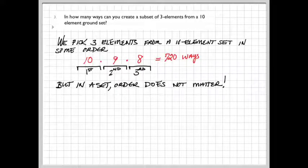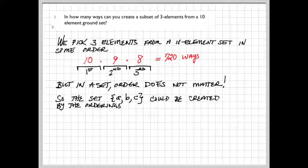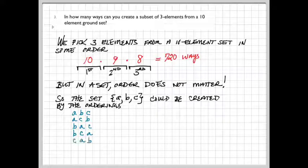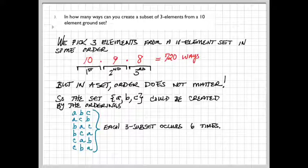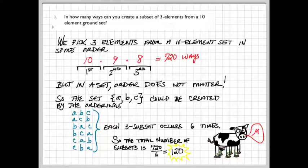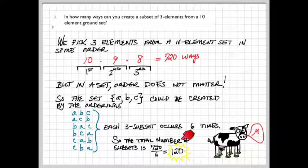Remember, in a set, order doesn't matter. In fact, if we have this subset that contains A, B, and C, that could be created by one of six different orderings: A, B, C; A, C, B; B, A, C; B, C, A; C, A, B; and C, B, A. And each three-element subset could have been created in one of six ways. This is a cow counting argument, but our cow happens to have six legs. That means the total number of subsets will be 720 divided by the six legs, giving us 120 subsets.